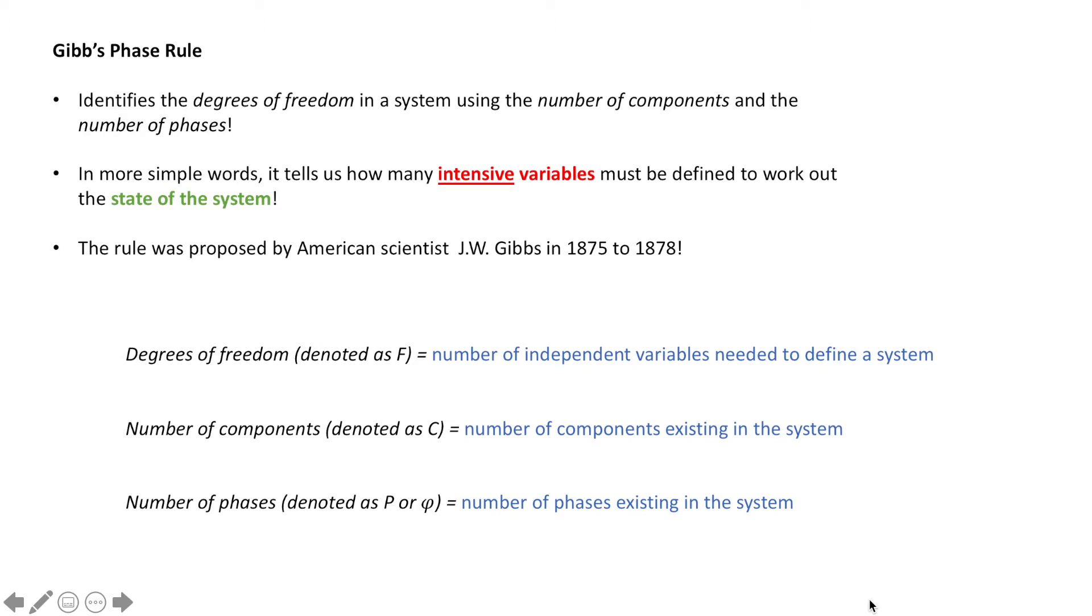Degrees of freedom, often denoted as F, is the number of independent variables needed to define a system. The number of components, denoted as C, is the number of components existing in the system. And number of phases, denoted as P or φ, is the number of phases existing in the system.